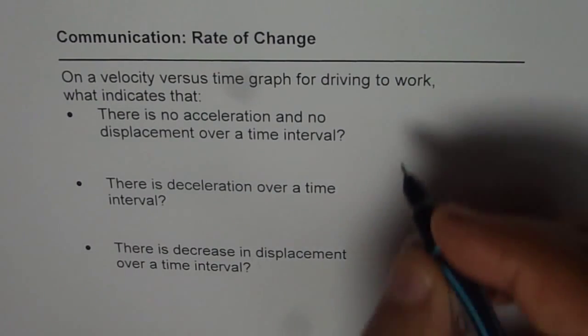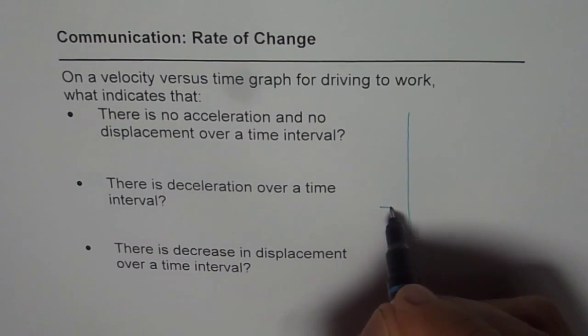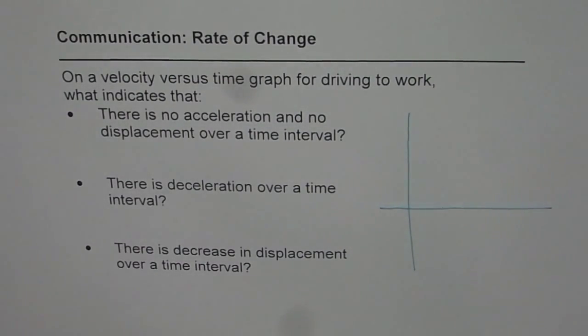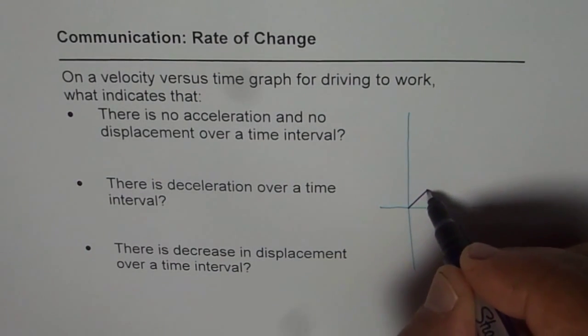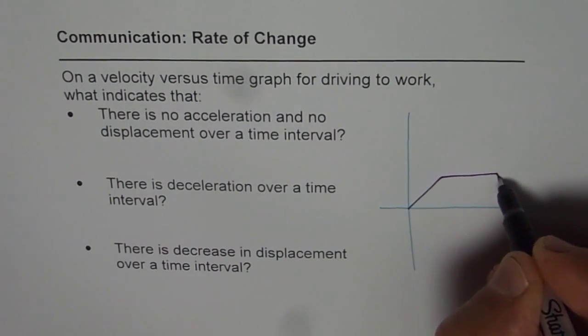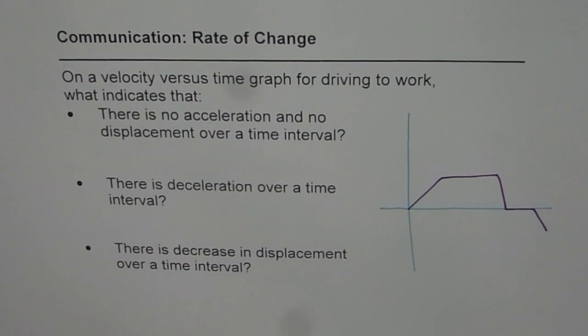Well, for that, let us sketch a velocity versus time graph and then discuss. So let's say the trip to the office is kind of like this. Let's say we go like this, come like this, come like this. Let's say that is representing a trip to work.